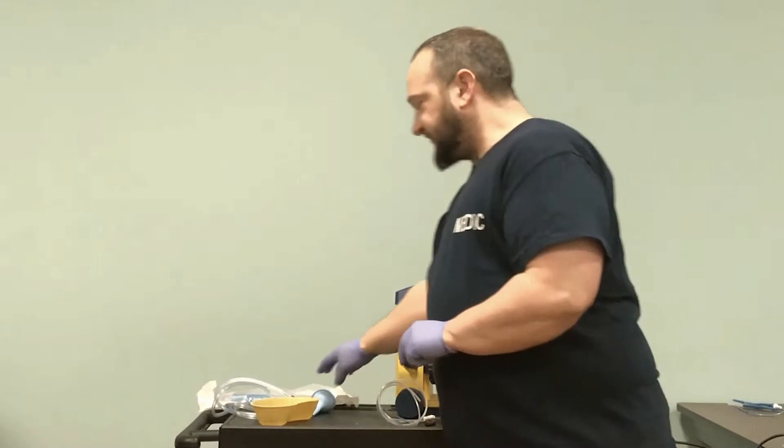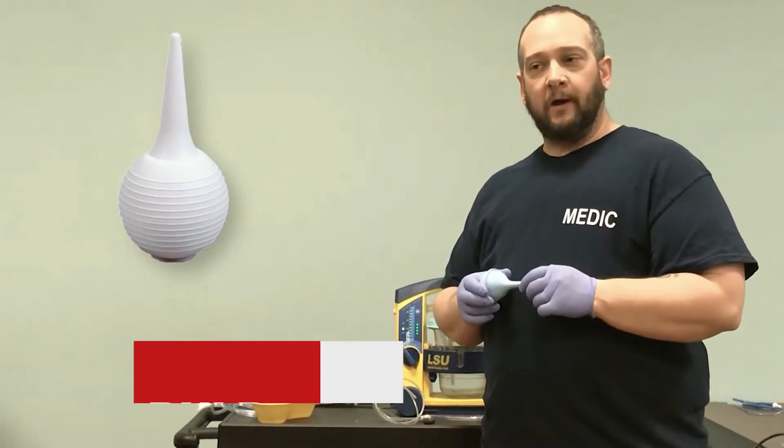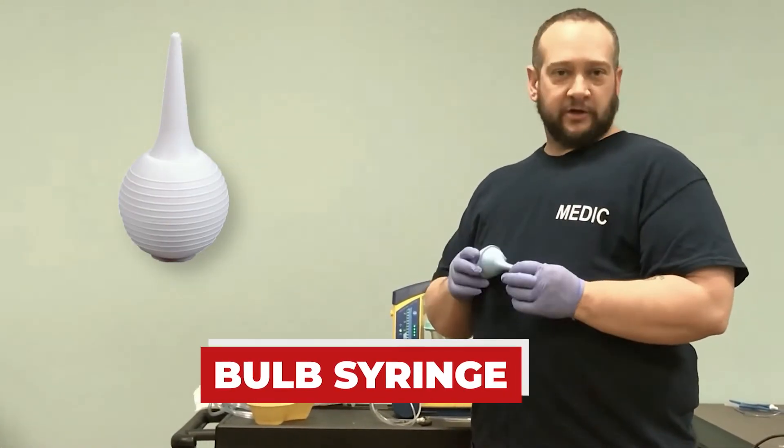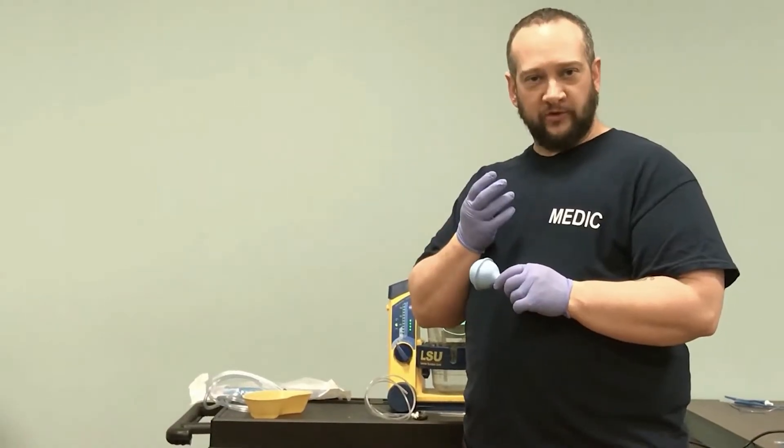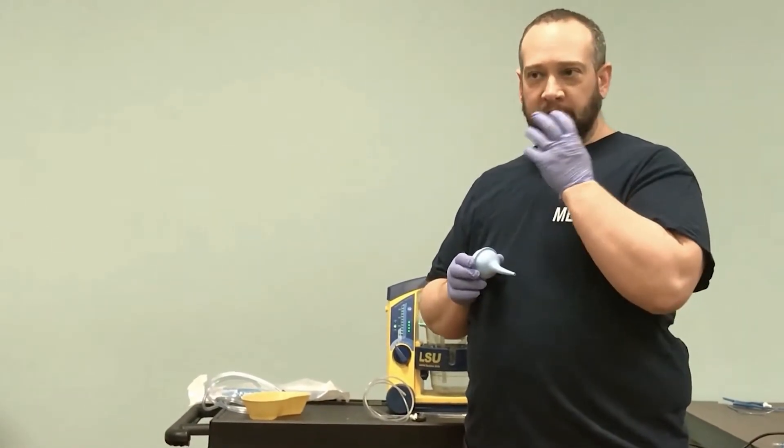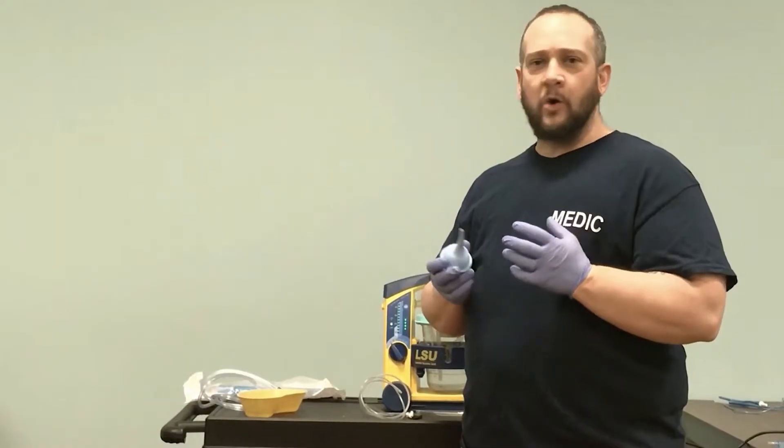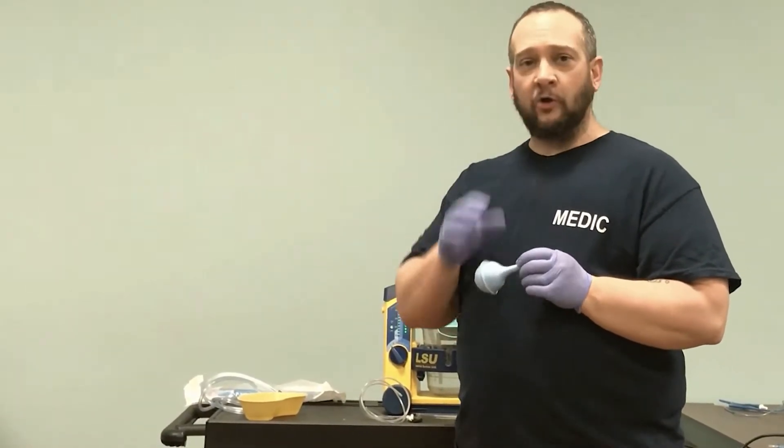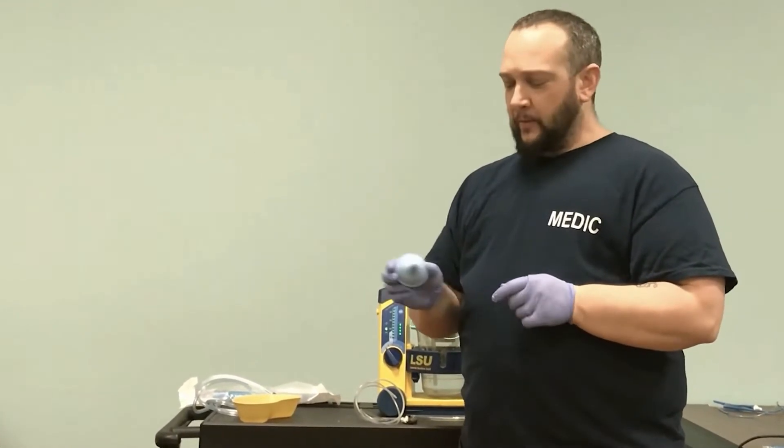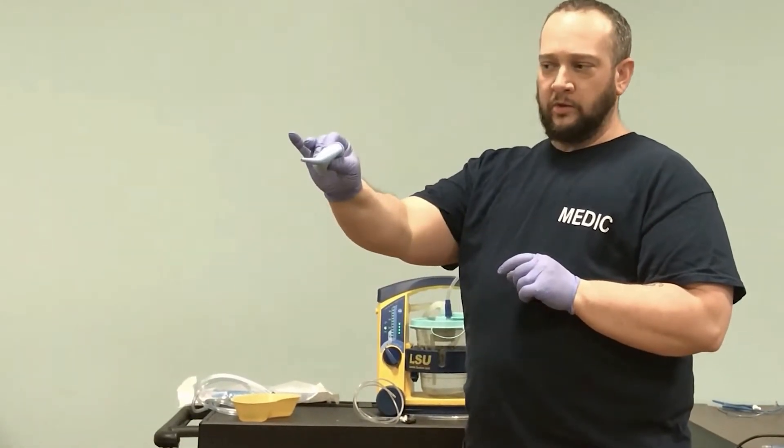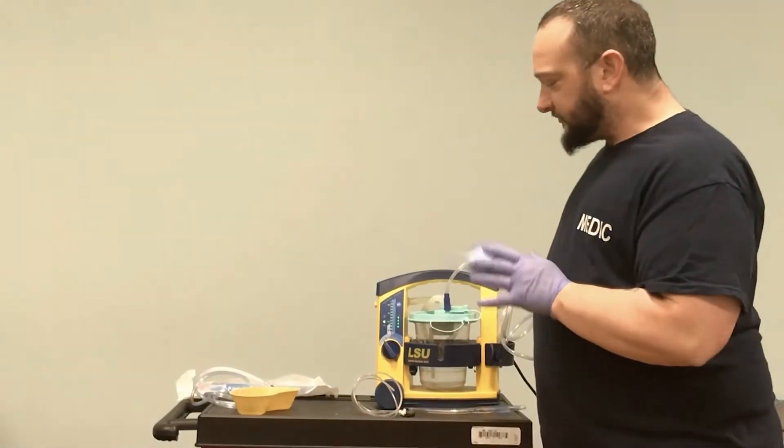For infants and newborns, we also have a bulb syringe for suctioning. We'll talk more in our OB section—we no longer immediately suction upon birth. But often infants and young kids are obligate nose breathers, and if they get a nose full of dried mucus, it interferes with their ability to breathe. We may have to demonstrate for new parents how to use the bulb syringe. You squeeze it, insert, and it suctions, then we discard it.